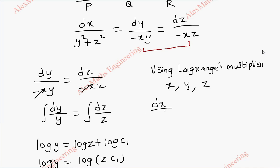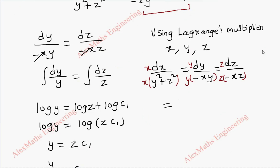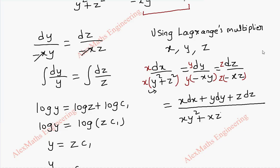So let's take the terms as they are. Now we are using the multiplier x, so we have to multiply in the numerator as well as in the denominator. Then y — here and here we have to multiply. Then here it is z, so multiply by z. Now using the properties of the ratio, we are going to add all the numerators together: x dx plus y dy plus z dz. Then we add the denominators. Writing in expanded form: x y square plus x z square, and this is minus x y square and minus x z square. So x y square positive negative, x z square positive negative — so totally it is zero.